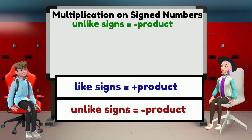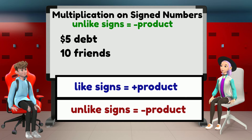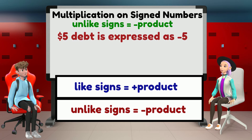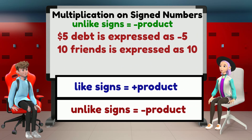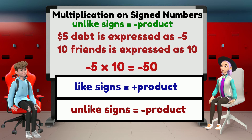What cases then do we multiply positive and negative numbers? For instance, if I borrowed $5 from each of my 10 friends, that means I have minus $50. Owing $5 means I have negative $5. Since I borrowed $5 from each of 10 friends, expressing that is negative 5 times 10, which equals negative 50. You now know that debt is expressed as a negative value.